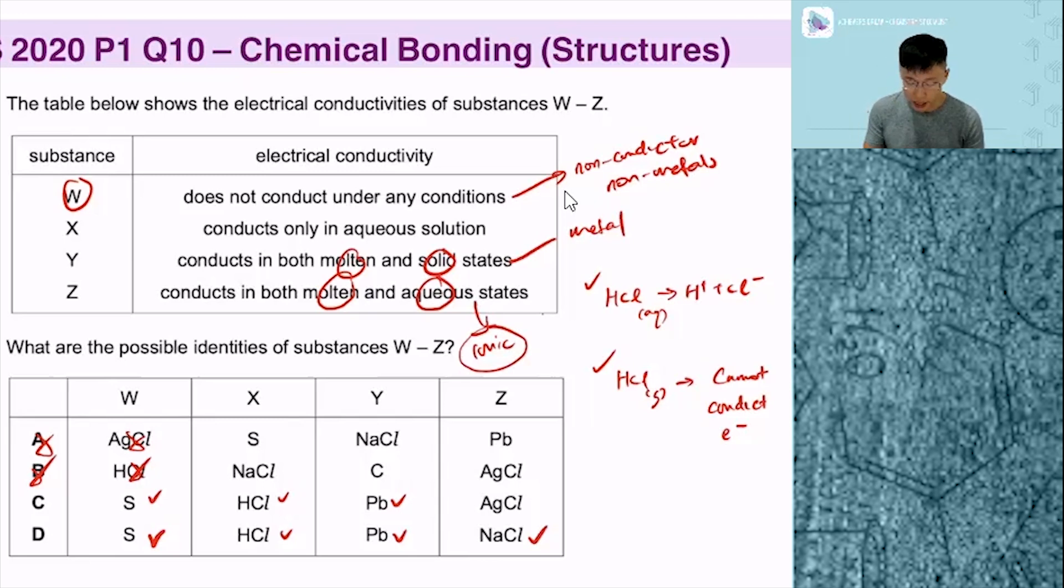Because if you were to choose between NaCl and AgCl, AgCl is insoluble. NaCl is soluble. That makes D the best answer over here. That's question number 10.